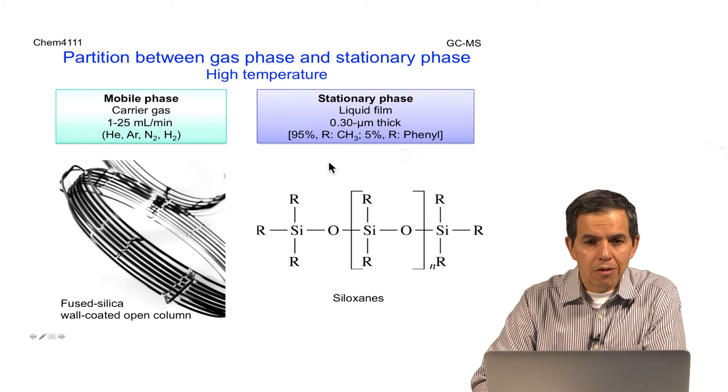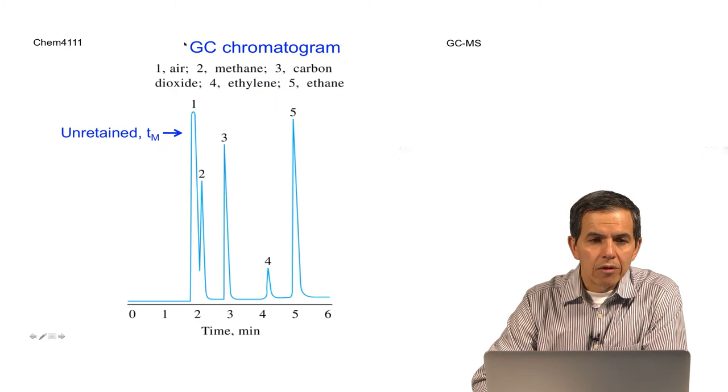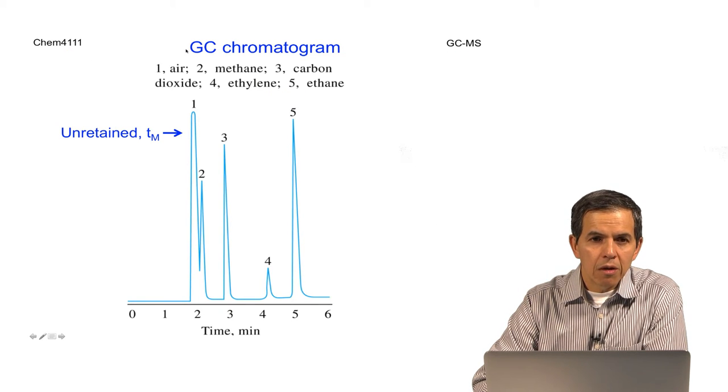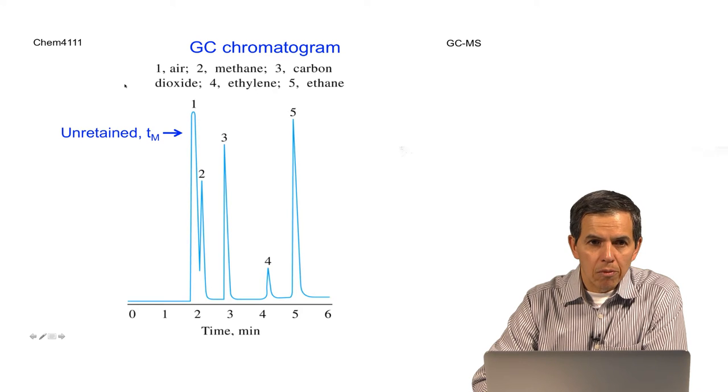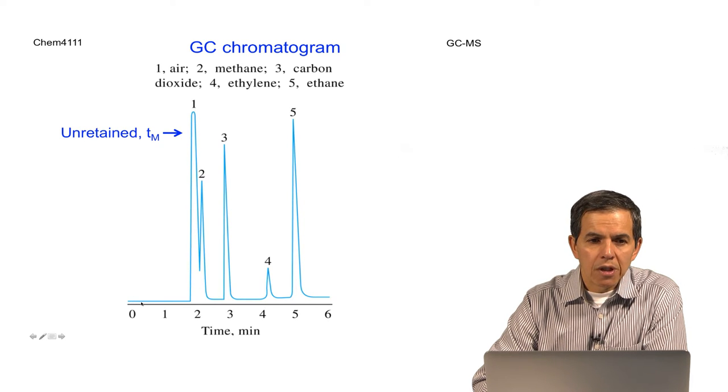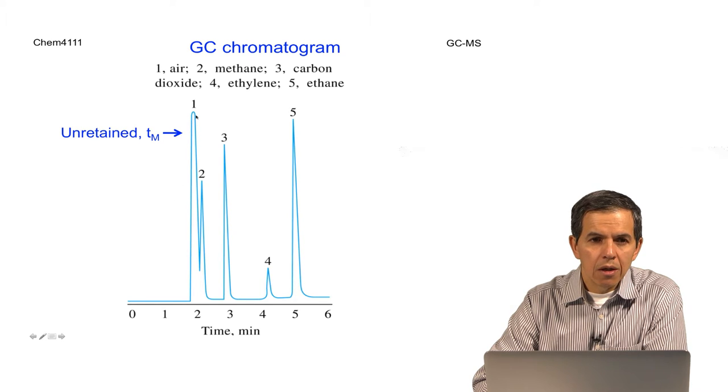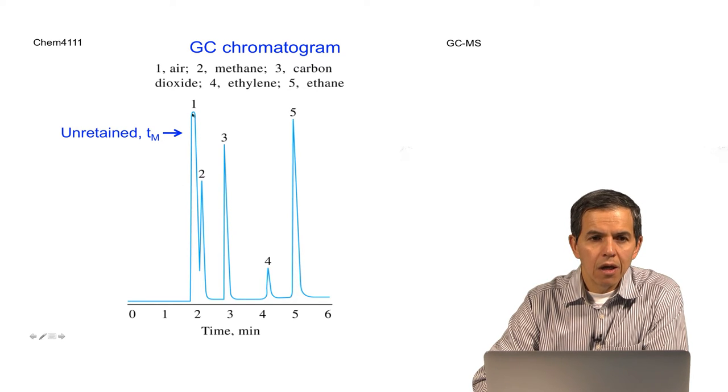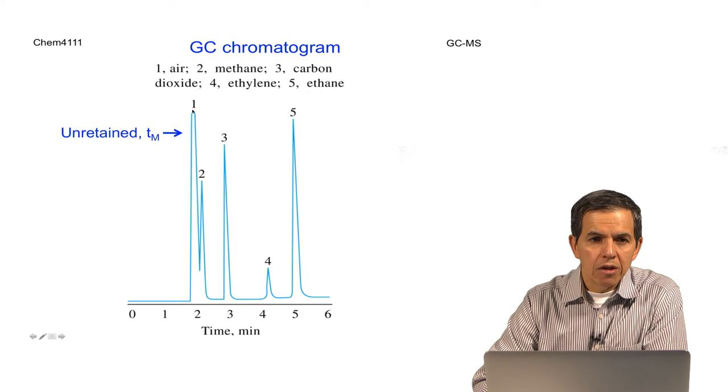These stationary phases are usually made of siloxanes. The representation of the data of a GC experiment is called a chromatogram. In a chromatogram, we have a plot of intensity versus time. Every time a component of the sample comes out, it will produce a band or a peak. The first compound that appears corresponds to air, the second corresponds to the least retained component.